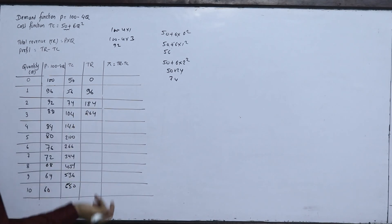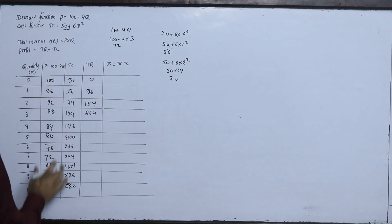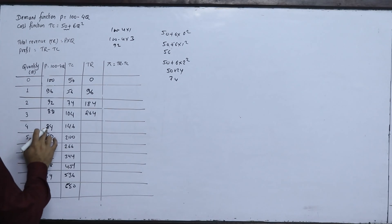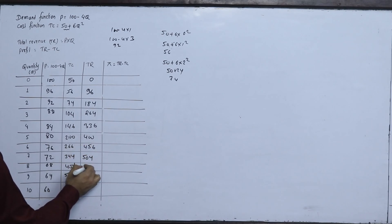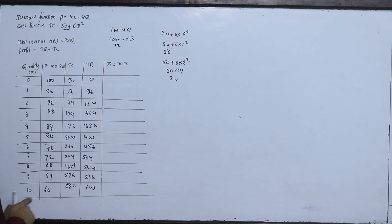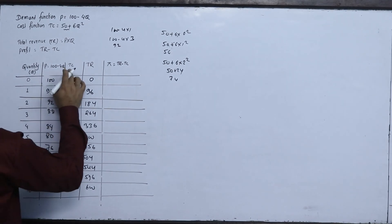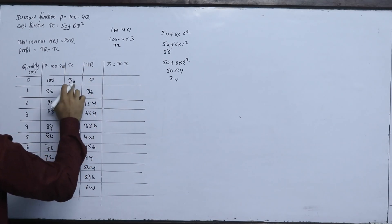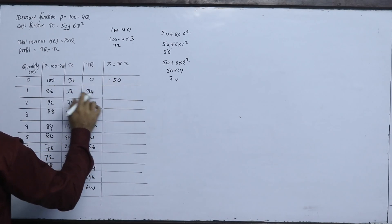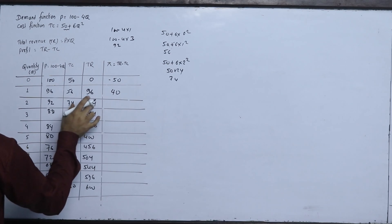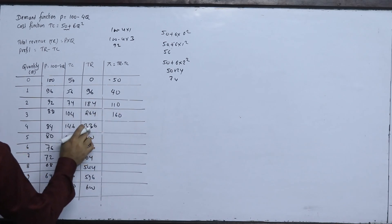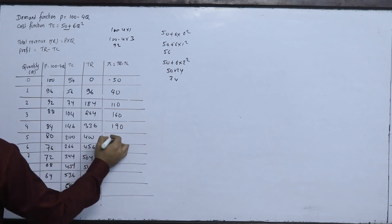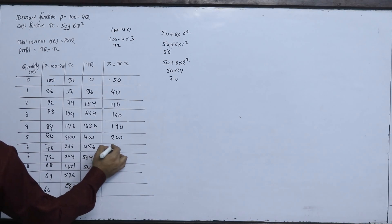Now for profit — TR minus TC: at q equals 0, profit is 0 minus 50, which is negative 50; at q equals 1, profit is 96 minus 56, which is 40; at q equals 2, it is 184 minus 74, which is 110; at q equals 3, it is 264 minus 104, which is 160; at q equals 4, it is 336 minus 146, which is 190; at q equals 5, it is 400 minus 200, which is 200; at q equals 6, it is 456 minus 266, which is 190.